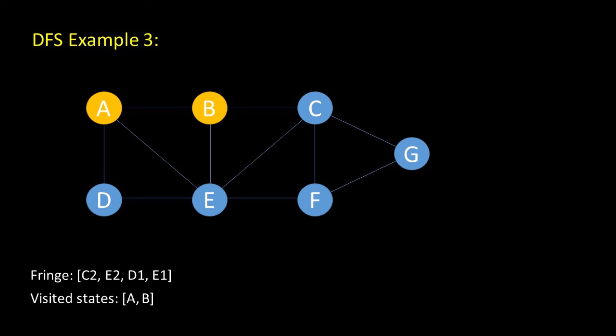We visit node C. Is C the goal node? No. So we expand C to get E, F and G. We visit E. Is E the goal node? No. So we expand E to get D and F. We visit node D. Is D the goal node? No. So we expand D. When we expand D, we find that there is no unexplored nodes. So we backtrack back to E and proceed to the next available node, that is F.